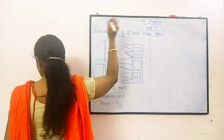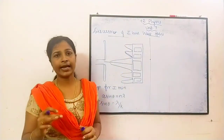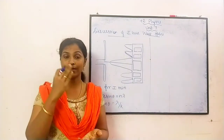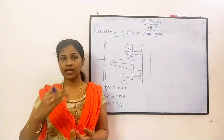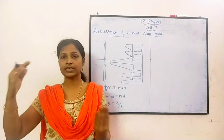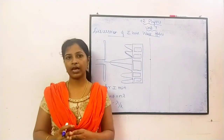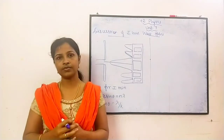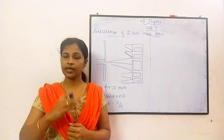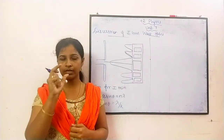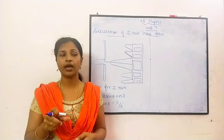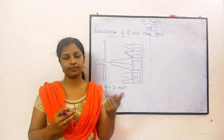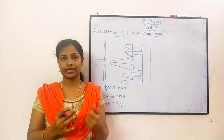In the last slide we have discussed and derived the conditions for the first minimum, second minimum, first maxima, second maxima — everything we have discussed. So here we are going to discuss the reason for the first minimum. We have already derived the expression, and now we are going to discuss the reason behind that expression.